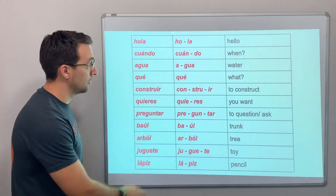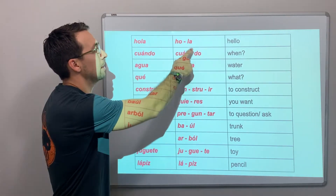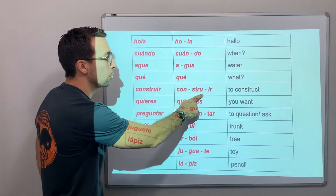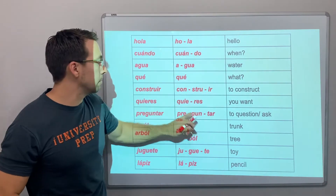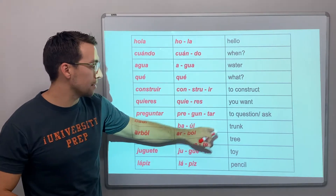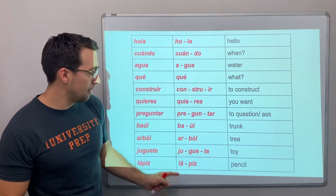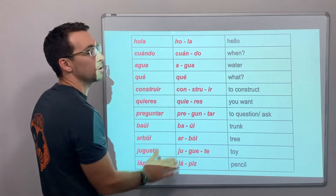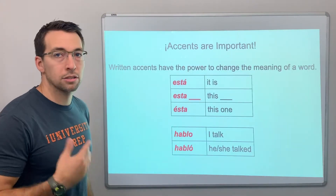It's lápiz. Notice that hola, cuando, agua, que, constru-ir — that I is receiving the emphasis there. Quieres, preguntar, baúl, árbol, juguete, lápiz. As you're reading, you can break the words into syllables and just notice that a consonant starts the syllable — it starts the sound.